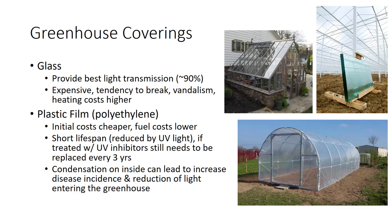A variety of greenhouse coverings are available today. The most important function of a greenhouse covering is to allow the maximum amount of sunlight into the greenhouse for the growth and development of plants. The five major types of greenhouse coverings are glass, plastic films, fiberglass reinforced plastic, acrylic, and polycarbonate. Each has advantages and disadvantages.